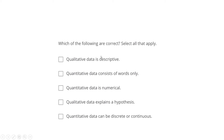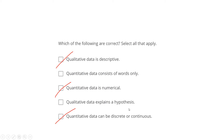Next question: Which of the following are correct? Select all that apply. Qualitative data is descriptive - yes, correct, that is words or text. Quantitative data consists of words only - no, quantitative data is numerical, so this is incorrect. Quantitative data is numerical - correct. Qualitative data explains a hypothesis - no, data does not explain a hypothesis; hypothesis is related to sample and population inference. Quantitative data can be discrete or continuous - yes, I have already discussed this with examples. So the correct answers are: qualitative data is descriptive, quantitative data is numerical, and quantitative data can be discrete or continuous.